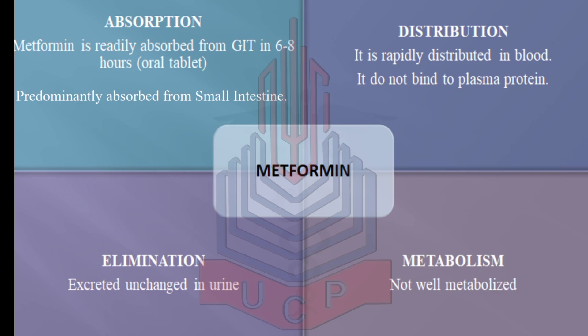Regarding the pharmacokinetics of metformin: metformin is readily absorbed from the gastrointestinal tract in six to eight hours. It is predominantly absorbed from the small intestine, rapidly distributed in the blood, and does not bind to plasma proteins. It is not well metabolized and is excreted unchanged in urine.